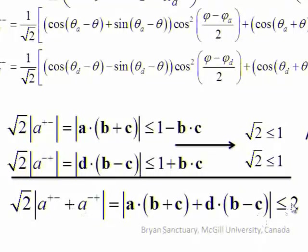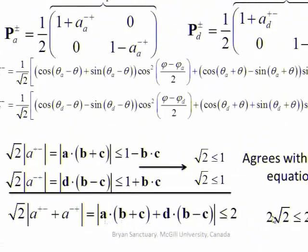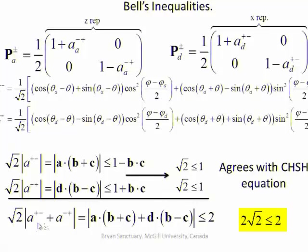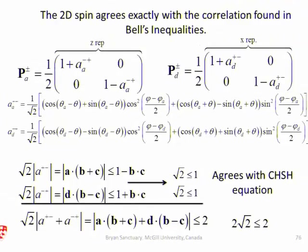But I'm saying here, oh yes, you do get the violation of Bell's inequalities of 2 root 2, because this is root 2, 1 plus 1. You get 2 root 2. It violates the Bell's inequalities, but you can only measure this axis or that axis at the same time. So the correlation found in the dimensional model is consistent with the correlations found in Bell's inequalities.